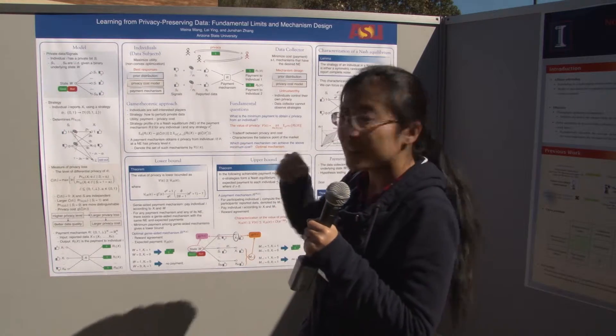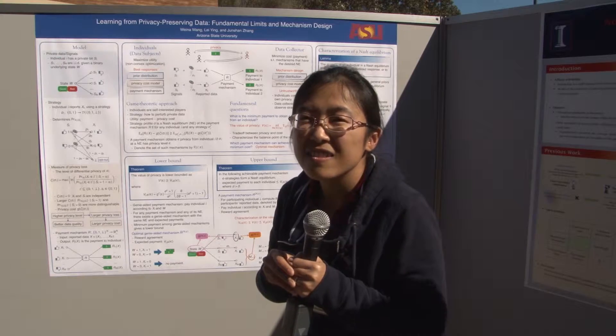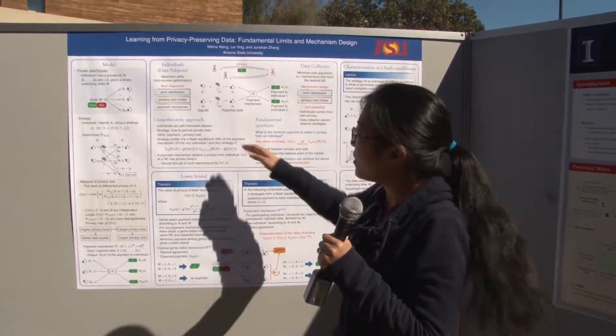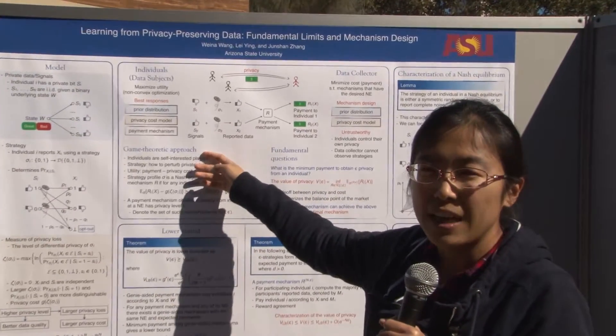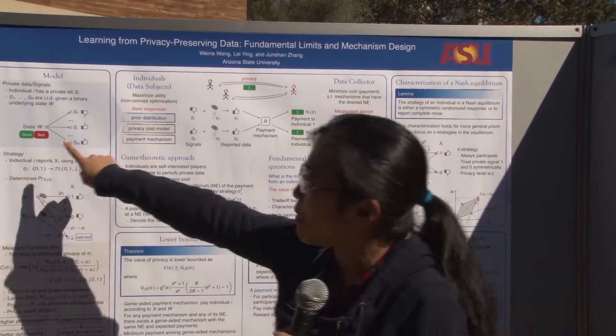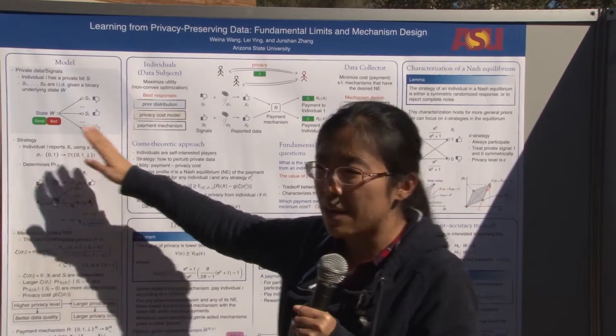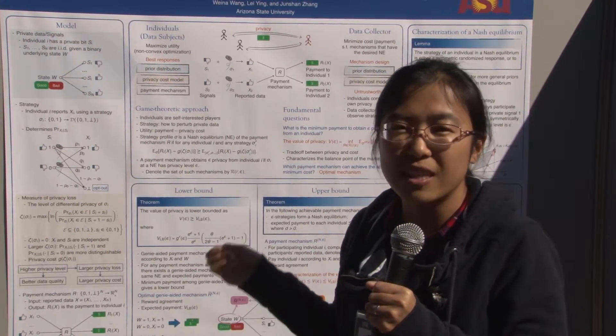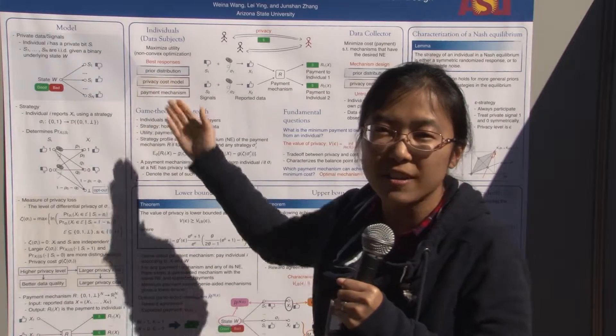So here's our model. Everyone has a private bit which represents her knowledge about some underlying state. For example, the underlying state can be the real value of some technology and product, and these signals are their opinions.